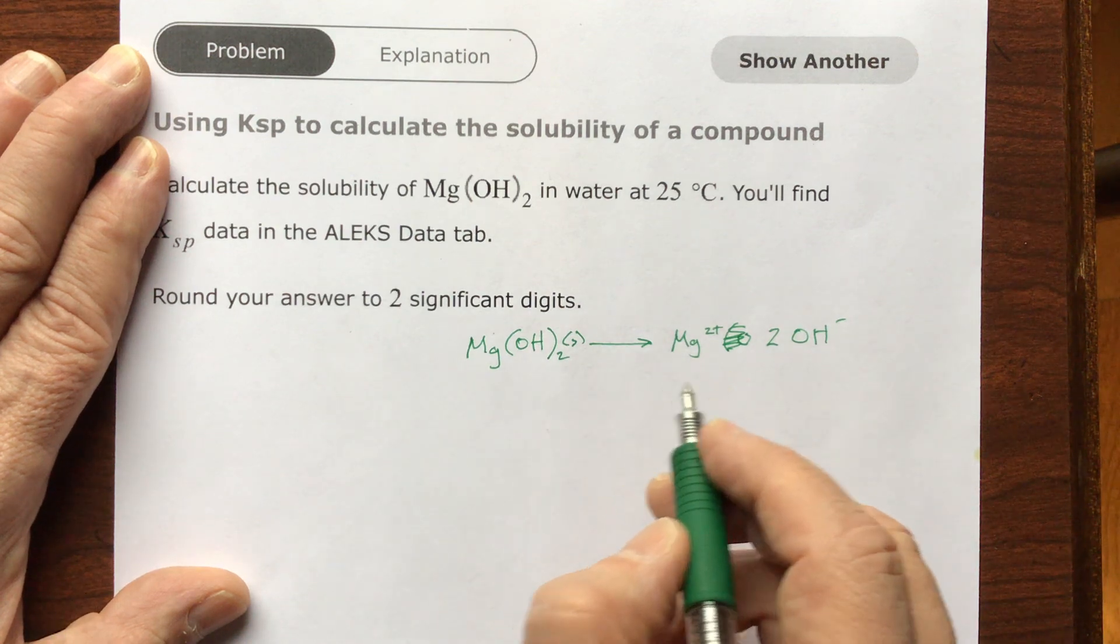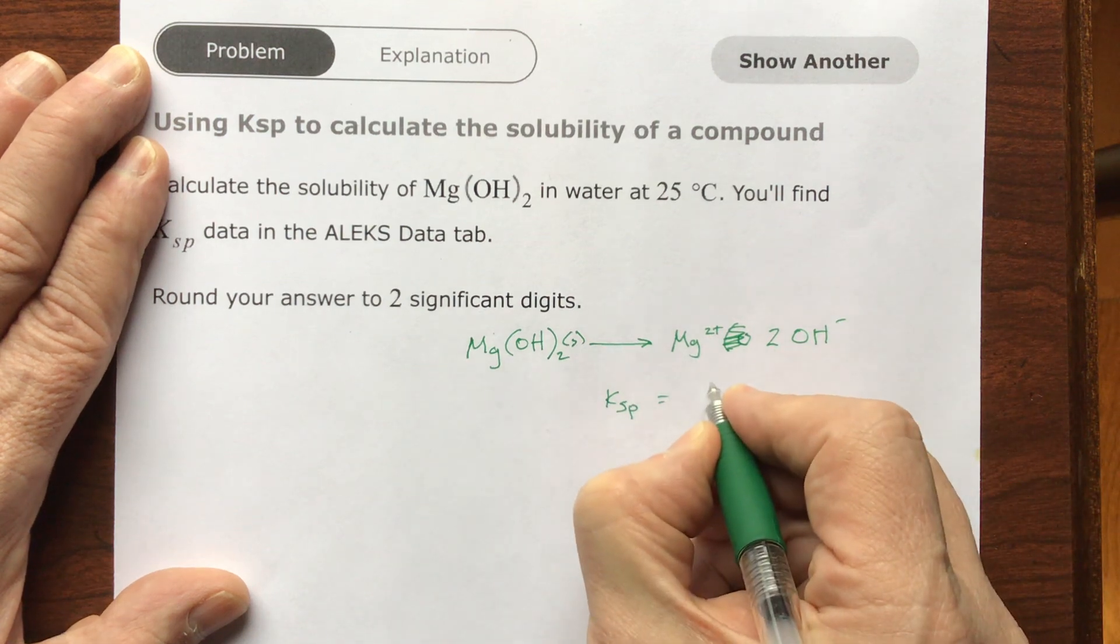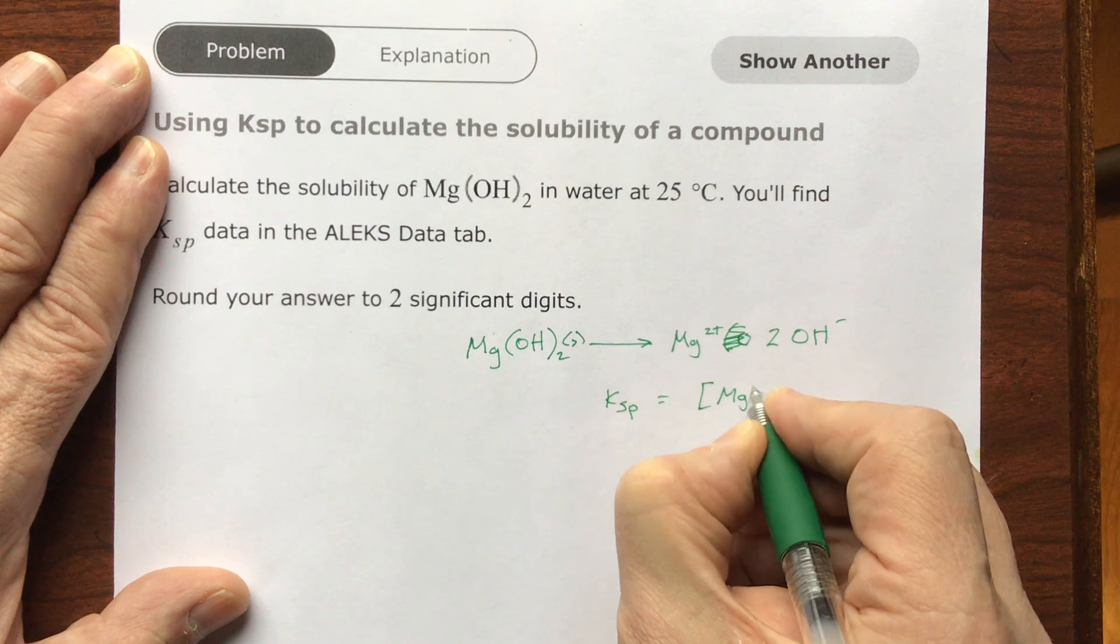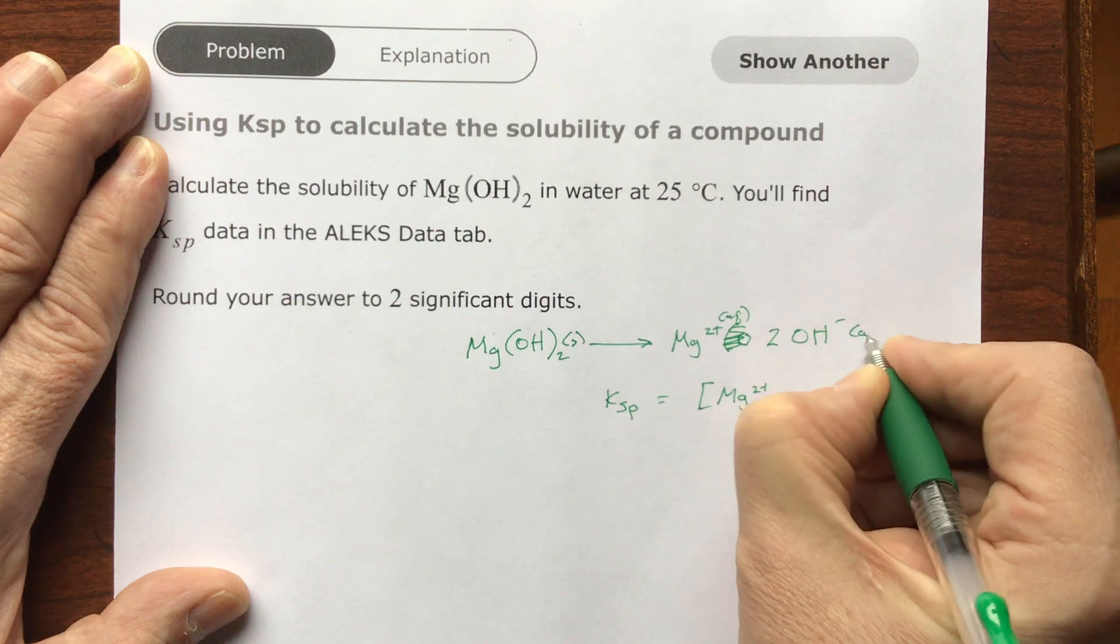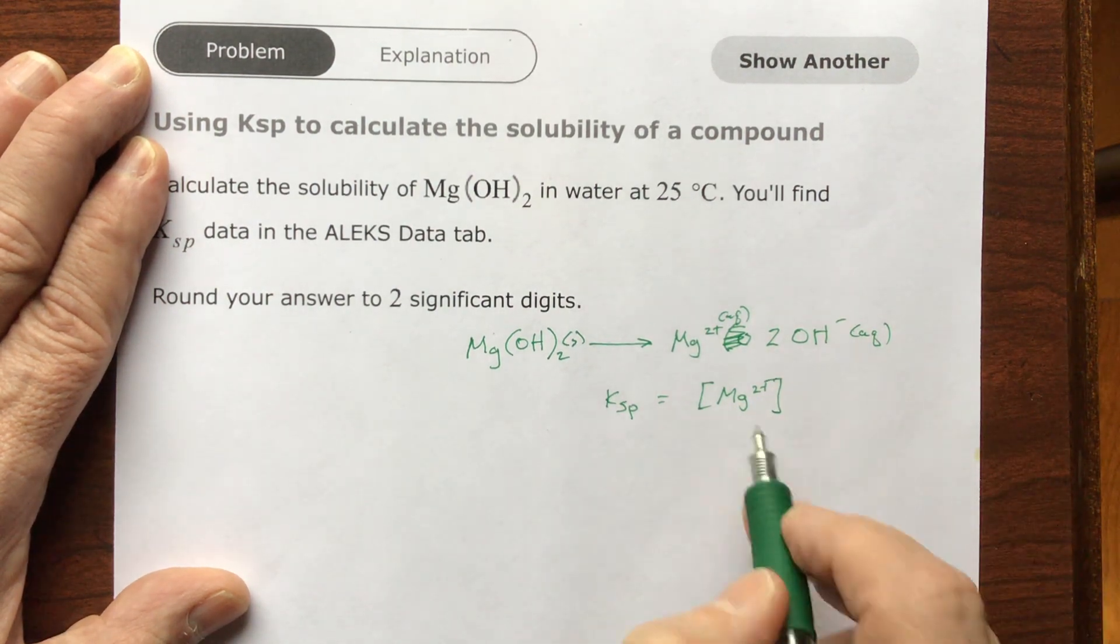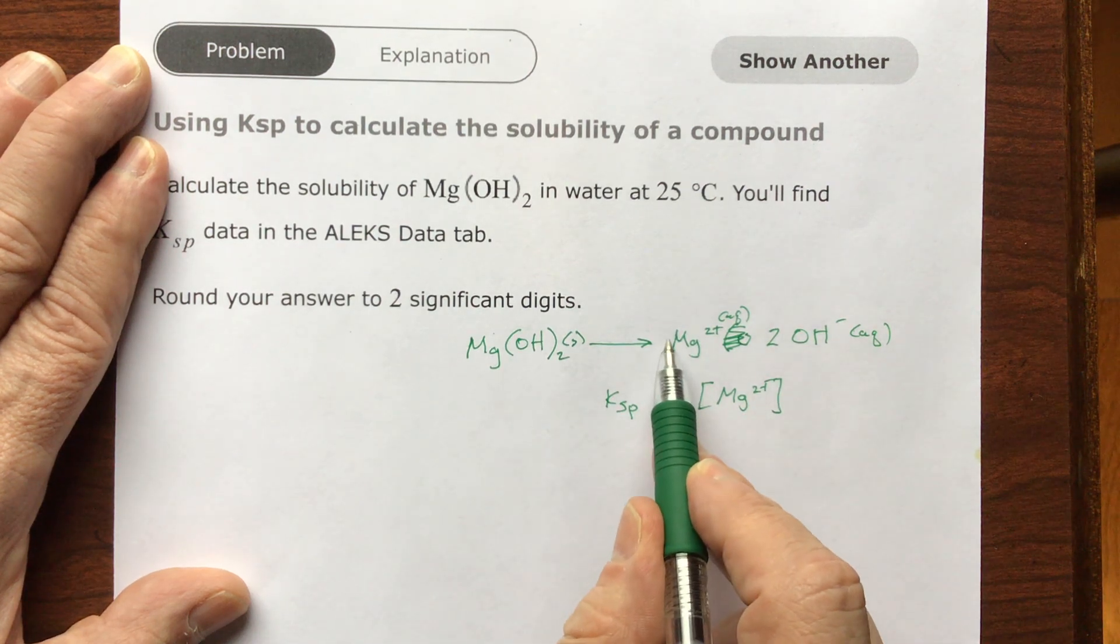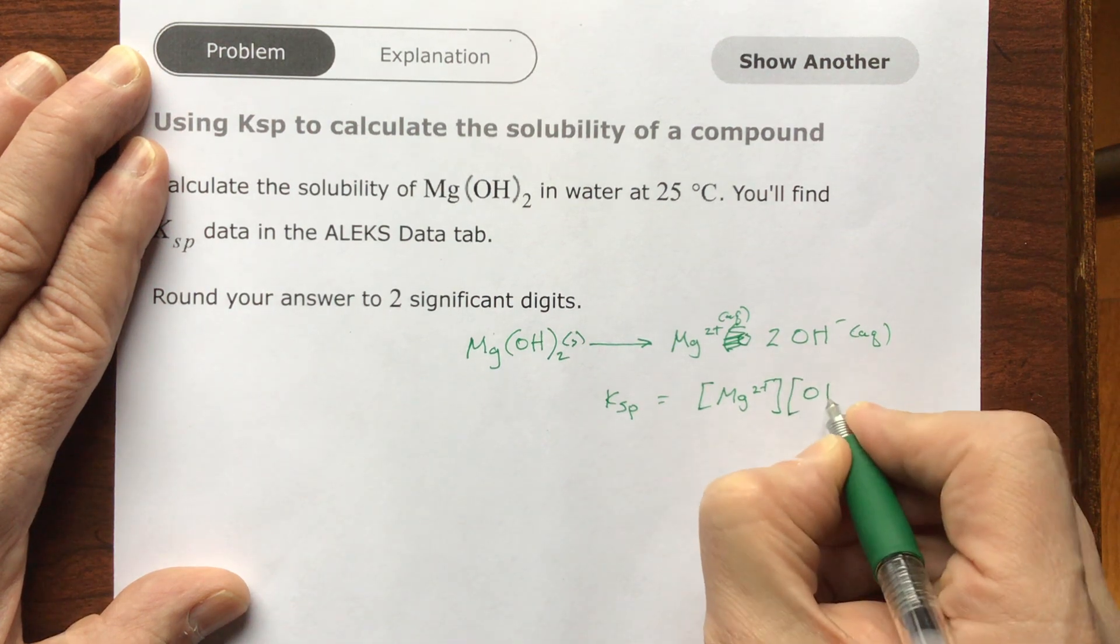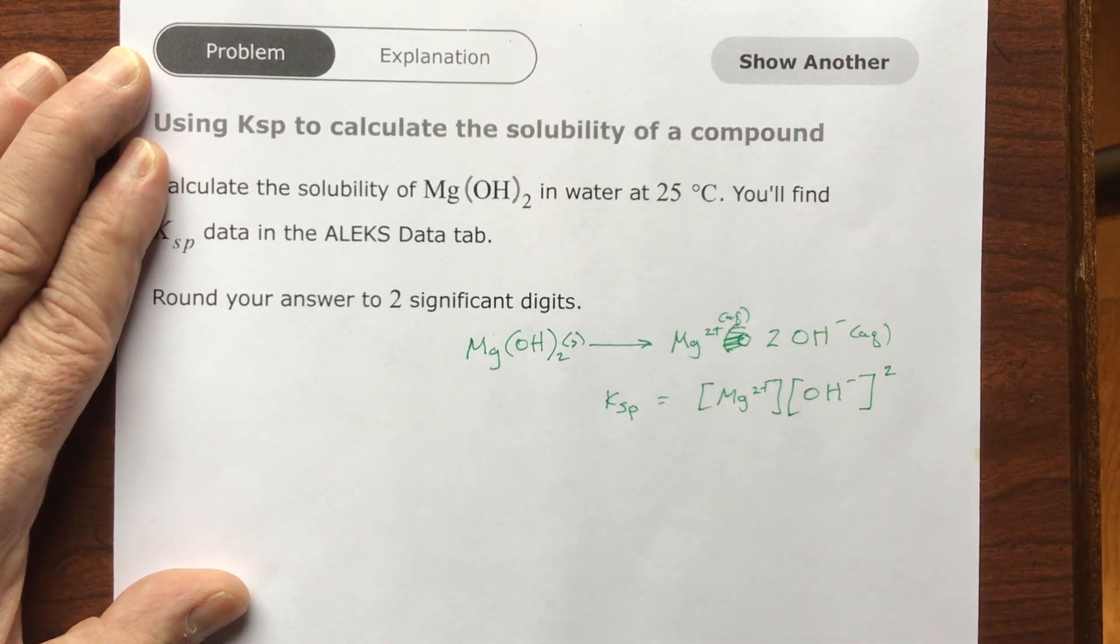We're going to see that the solubility product, the Ksp, is going to be the concentration in molarity of the magnesium ion. So this is aqueous, this is aqueous. So these dissolve, and so you're going to have a concentration in the water, and have a solution in the water with this raised to the first power because this is a coefficient of 1.